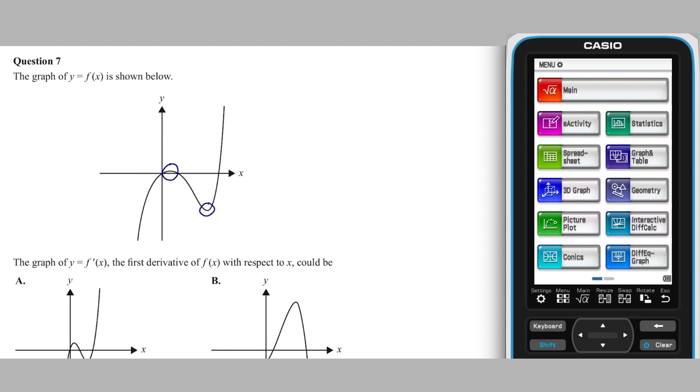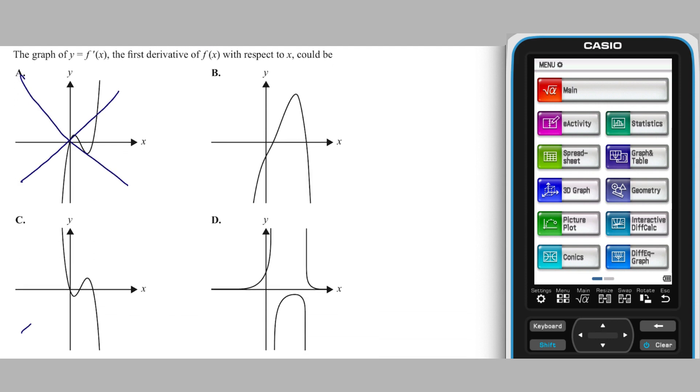These two stationary points tell us that y equals f of x will have two roots, which eliminates options a, c and d.